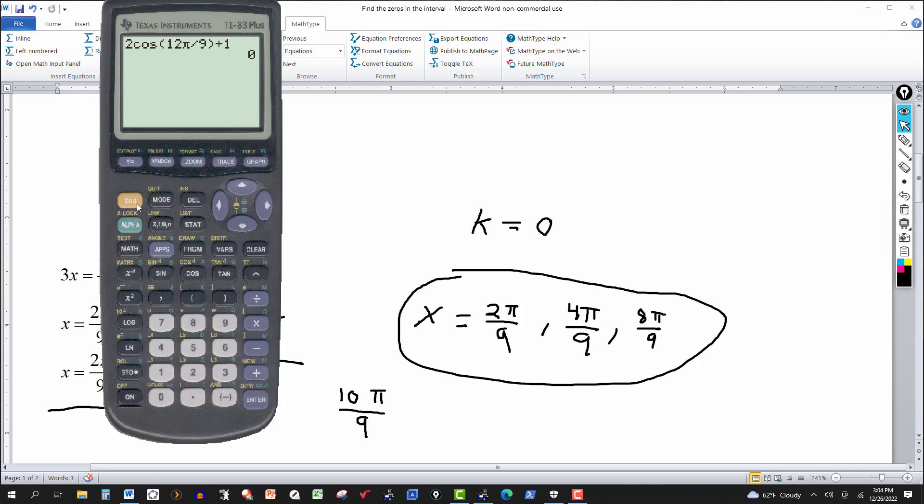And then for the third one again, I'll get the second entry. Multiply the 8π over 9 by 3. And this should come out to 24π over 9, and that's plus 1. So 2 cosine 24π over 9 plus 1. Hit enter. It gives me 0. It checks out. Thanks for watching. We'll see you next time.